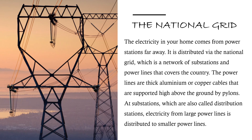The national grid: the electricity in your home comes from power stations far away. It is distributed via the national grid, which is a network of substations and power lines that covers the country. The power lines are thick aluminium or copper cables supported high above the ground by pylons. At substations, which are also called distribution stations, electricity from large power lines is distributed to smaller power lines. If you look at this picture you will see an image of a pylon.